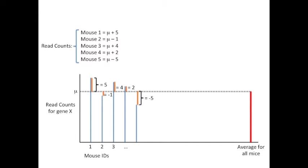We can now formulate the read counts for each mouse as mu plus the difference from mu. Why we would like to do this will be seen shortly, so just hang on. Given our new, fancy formulation for the read counts for each mouse, we can use them to calculate the average read count for gene X from the five samples that we've collected.